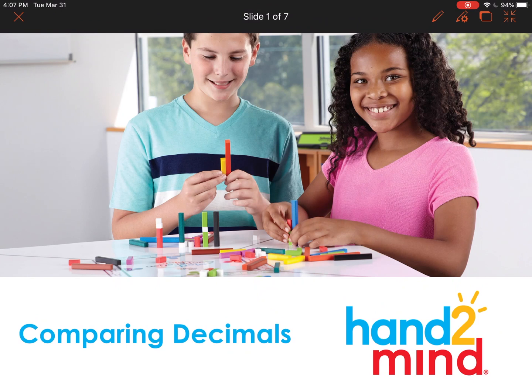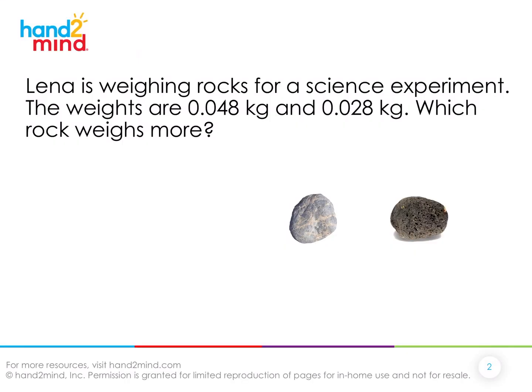Today, when comparing decimals, we're going to look at something that might occur in a science classroom. Not just because we do races, but also because in science we weigh a lot of things. And when we weigh things, we want to be as precise as possible, especially in an experiment. So going all the way to the thousandths with our weights can be very helpful. Let's listen to this story about Lena and what she's doing in science class. You can follow along or read along with me.